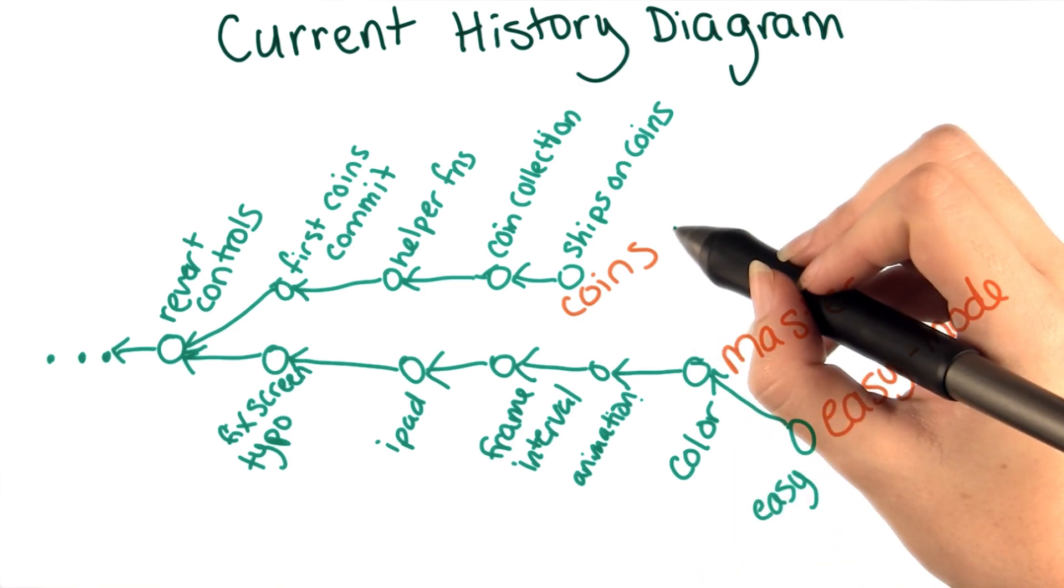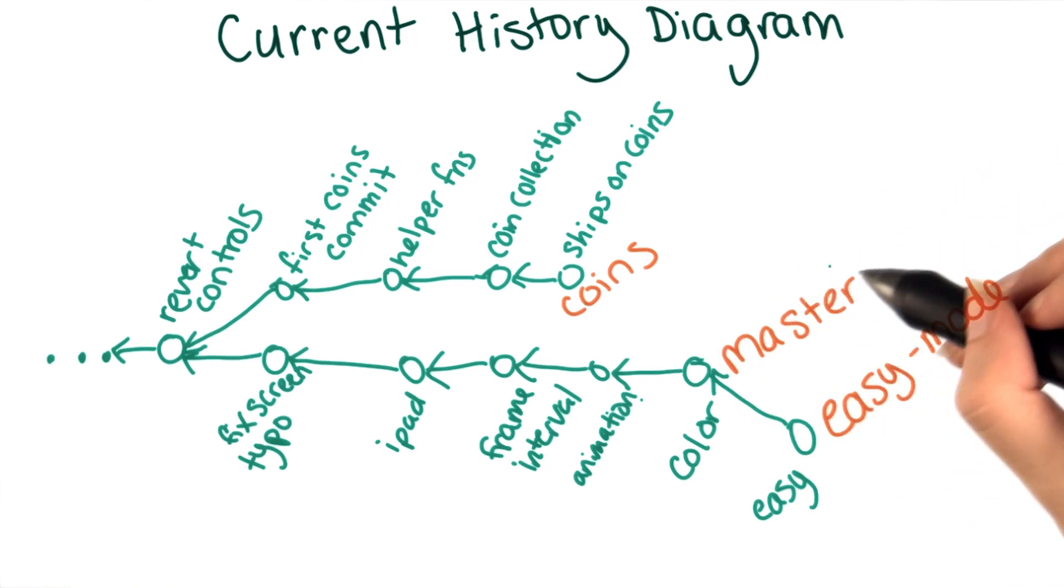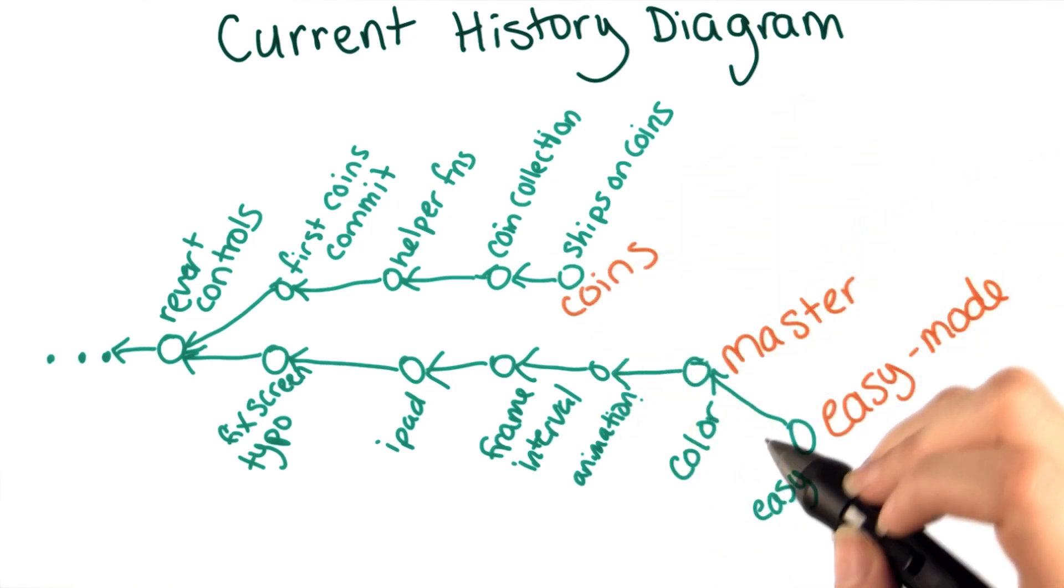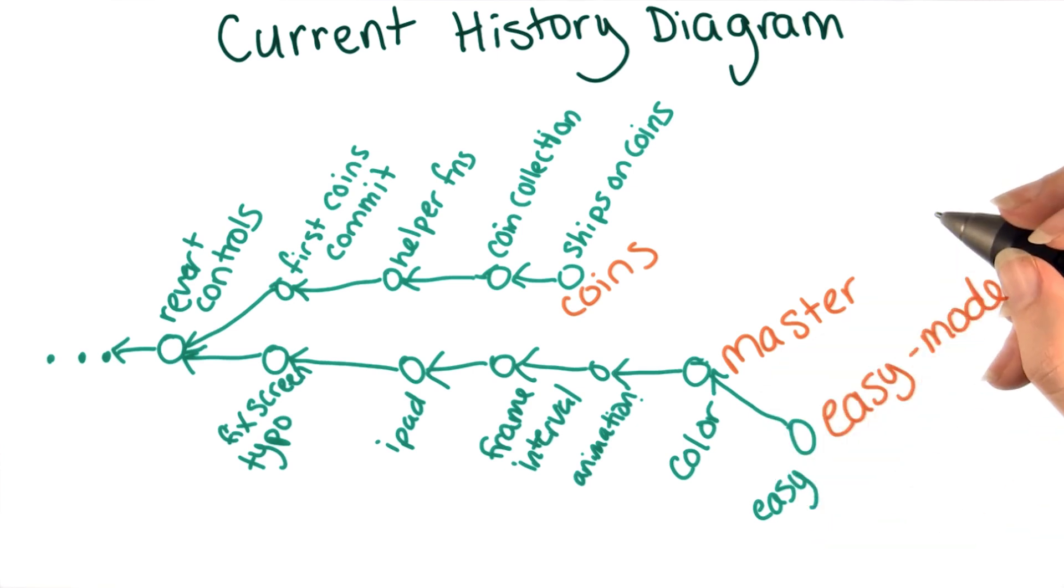Right now, I want to create a combined version of my coins branch and the master branch. If all Git had was these two commits, it wouldn't be able to tell how to merge them together, just like you couldn't tell earlier whether Jake added a line or whether Rachel deleted it.